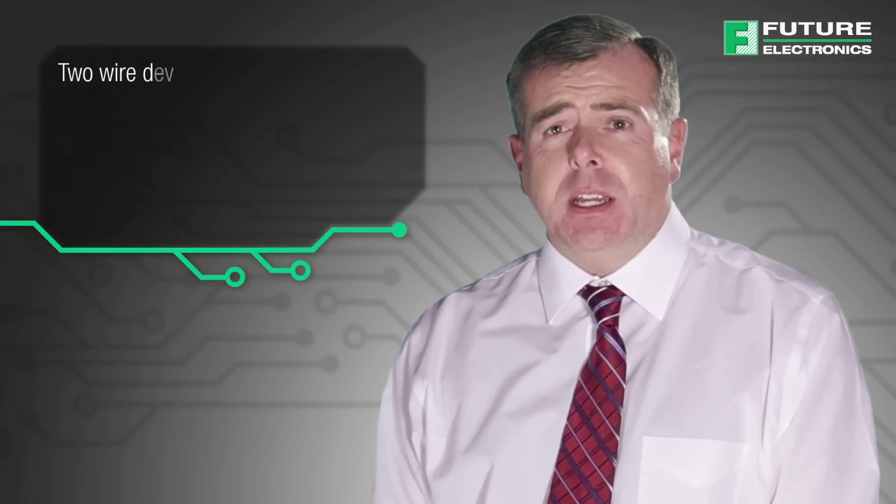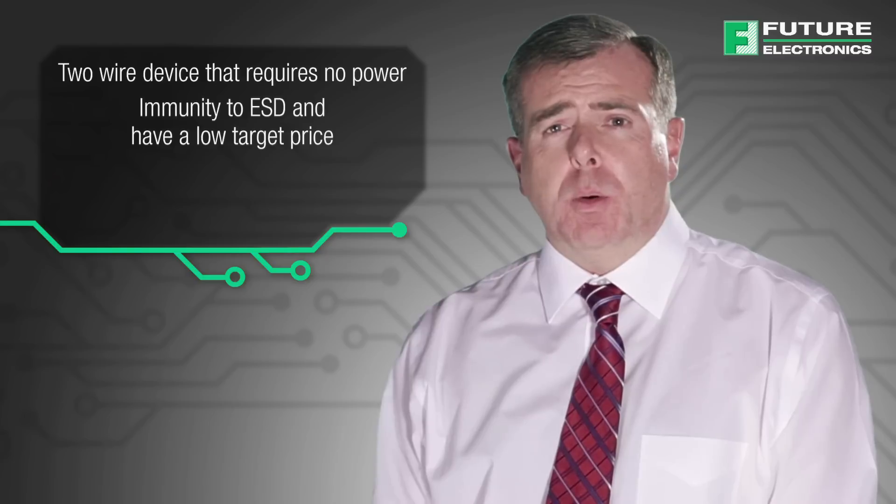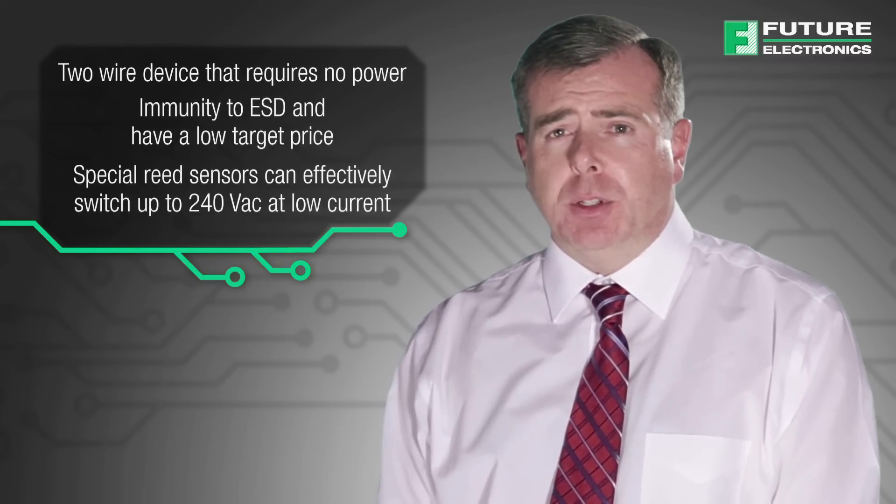A reed sensor may be preferable to a Hall effect sensor if you have the following requirements: you need a two-wire device that requires no power, you require immunity to ESD, and have a low target price.